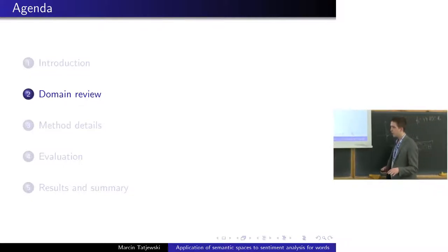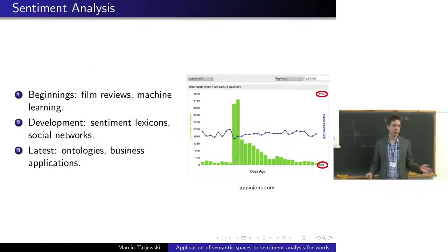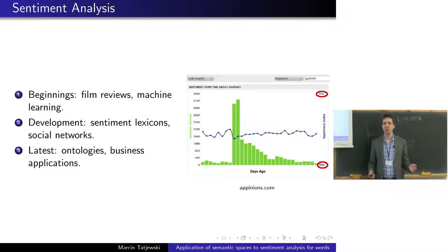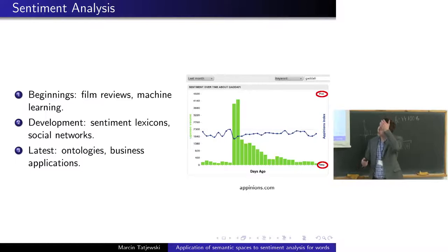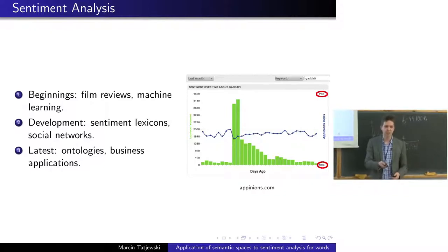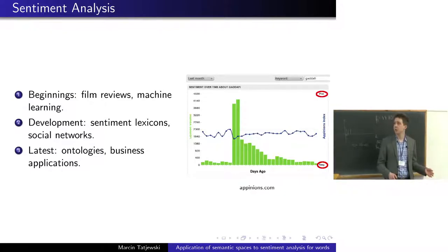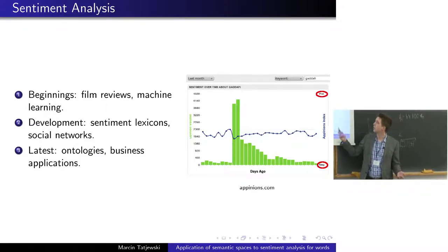This method is at the intersection of two domains: sentiment extraction and semantic spaces. Most of you will know a lot about sentiment extraction, so I won't spend long there. It started with scientists wanting to automatically classify film and product reviews with simple machine learning methods. Later, sentiment lexicons emerged, giving rise to tools like Mike Thelwall's SentiStrength. Current trends include ontologies for aspect-based sentiment extraction and many business applications.